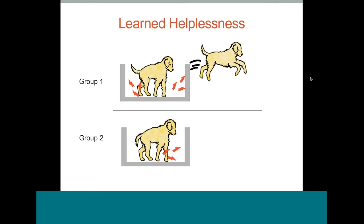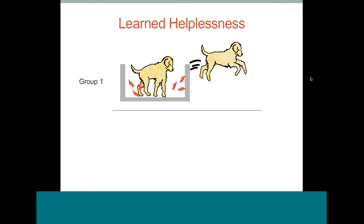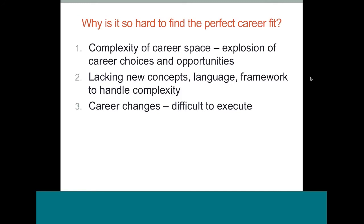You may ask: if I don't get good career results after trying a bunch of things, I may get into this learned helplessness state and believe there's nothing I can do. But why didn't the things I tried work in the first place? Here are three reasons why it's so hard to find a perfect career fit — and all of the reasons point to the fact that career design is a much more complicated problem than we give it credit for.